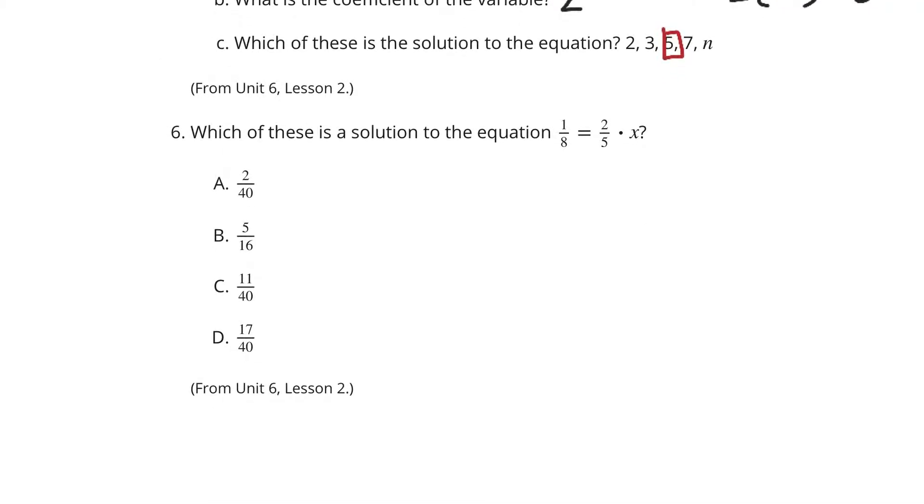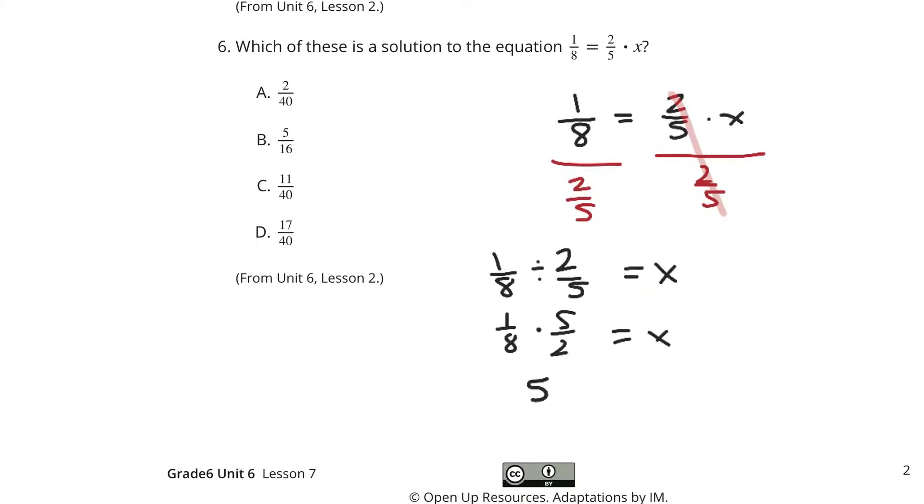Now which of these is a solution to 1/8 equals 2/5 times x? If I have 1/8 equals 2/5 times x. One of the ways I can solve this is to divide by 2/5 on both sides, if I don't want to just guess and check. Because 2/5 divided by 2/5 is 1. So we're left with 1/8 divided by 2/5 equals x. And if we multiply by the reciprocal by keep, change, flip, we end up with 1 times 5 is 5. 8 times 2 is 16. 5/16 is going to equal the x. And so which of these are our solution? Simply b. 5/16.